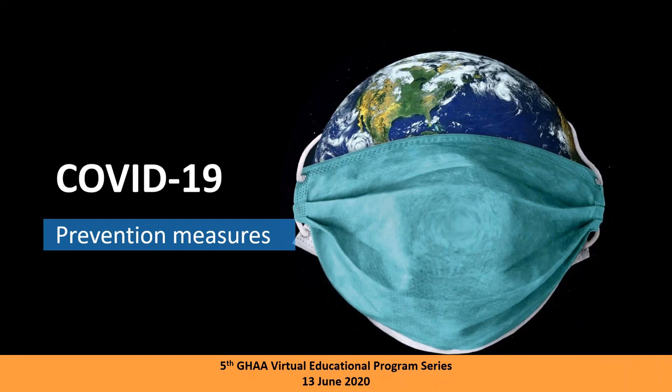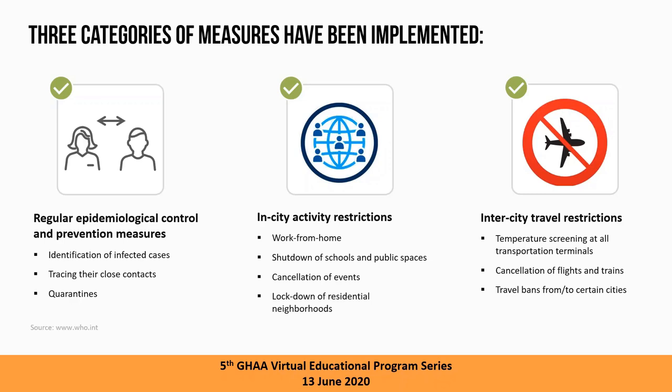Most countries took control measures to slow the spread of the virus, ranging from low to very high level. We can categorize these into three groups: first, regular epidemiological control and prevention measures — identifying infected cases, testing close contacts, and quarantines. Second, city activity restrictions — work from home, shutting schools, universities, colleges, and cancelling events. Third, intercity travel restrictions — cancellation of flights between cities and countries. Categories two and three are considered irregular and usually very aggressive.